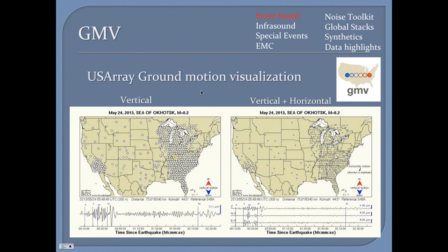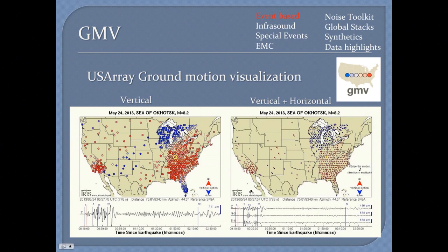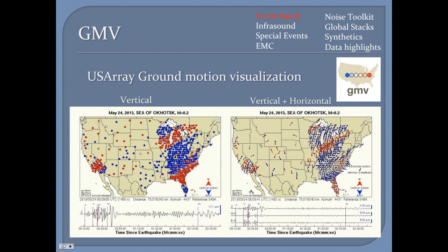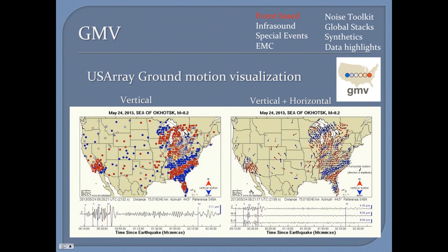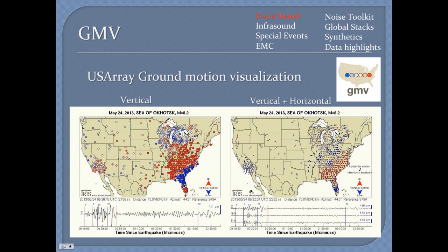We're going to jump right into the ground motion visualizations. A lot of you guys have probably seen this. What my colleague Manoch and I did this morning is we combined a really neat set of GMVs. These are from the Sea of Okhotsk event, which was the biggest deep earthquake. This is the GMV from this event. On the left is the vertical component and on the right is the wheat field version, which is the horizontal components. That's the P wave coming in, then you see the S waves, then the surface waves, and later you'll see the Great Arc Path coming from the southeast going up to the Great Lakes.